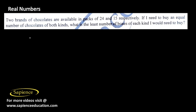Two brands of chocolate are available in packs of 24 and 15 respectively. If I need to buy an equal number of chocolates of both kinds, what is the least number of boxes of each kind I would need to buy?